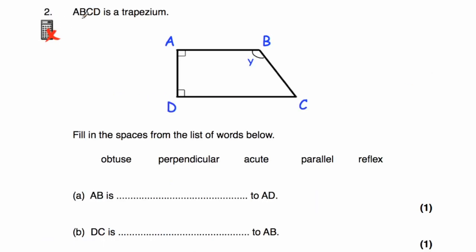Question two: ABCD is a trapezium — a four-sided shape with one pair of parallel lines. We've been given the words obtuse, perpendicular, acute, parallel, and reflex, and we've got to complete the sentences. Part A: the line AB is something to AD. AB and AD meet at 90 degrees, so they are perpendicular. The line AB and AD are perpendicular — they meet at 90 degrees.